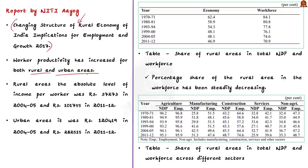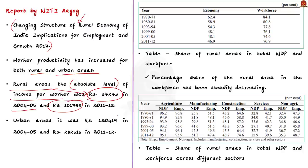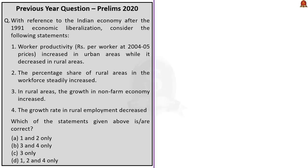Now let us focus on the question. As per the report by Nithya Yog — Changing Structure of Rural Economy of India: Implications for Employment and Growth (2017) — the absolute level of income per worker, that is worker productivity, increased for both rural and urban areas. In rural areas it was Rs. 37,273 in 2004-05, increasing to nearly Rs. 1 lakh in 2011-12. In urban areas it rose from Rs. 1,20,419 to nearly Rs. 2,82,000. Hence, Statement 1 is incorrect.